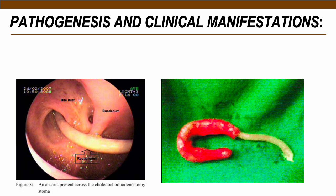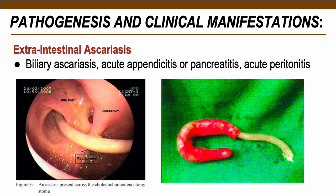Extraintestinal Ascariasis results from erratic migration of adult worms from the intestine to other organs, potentially causing serious or fatal effects. Worms may invade the bile ducts of the liver, causing biliary Ascariasis with blockage and tissue hypoxia, potentially damaging the liver. Other organs may be affected, such as the appendix causing acute appendicitis, or the pancreas and peritoneal cavity.